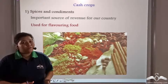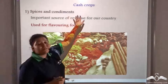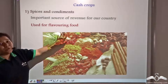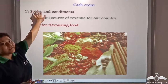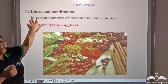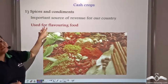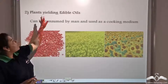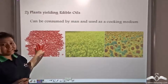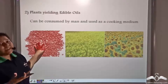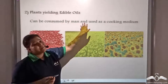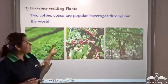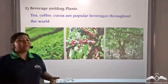Crops are not only cultivated for their food value but also for their commercial value. Cash crops also form a trading relation between nations. One of the cash crops grown commonly in many countries are spices and condiments. Spices are an important source of revenue and are used for flavouring food. Cash crops can also be plants yielding edible oils, such as nuts, mustard, and sunflower. Beverage-yielding plants — tea, coffee, and cocoa — are also important cash crops.